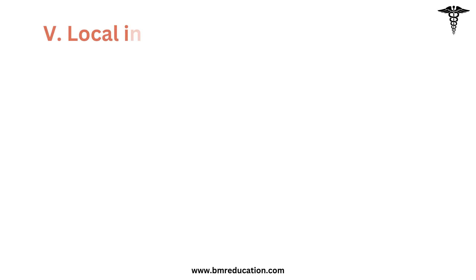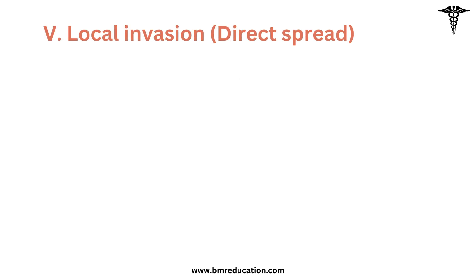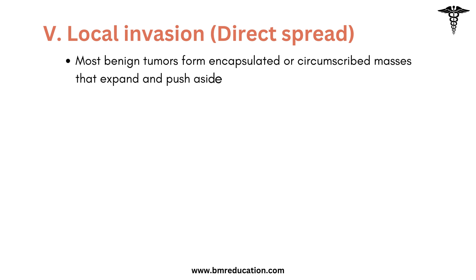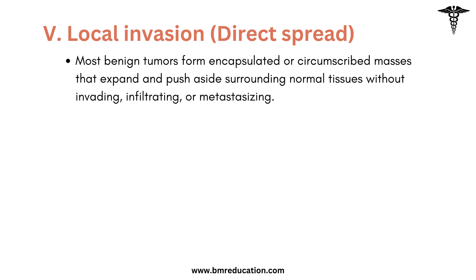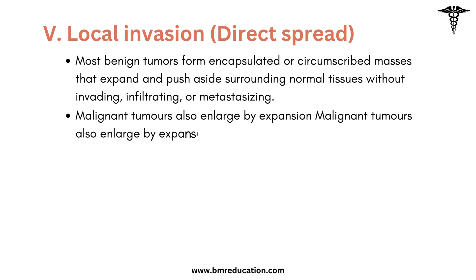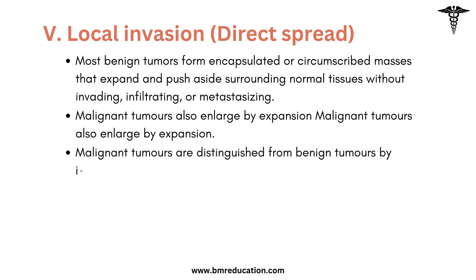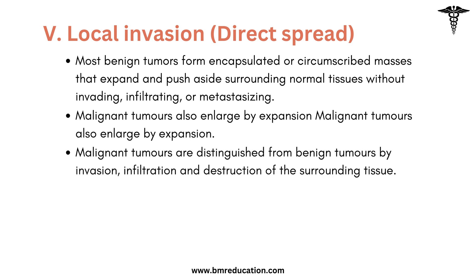The next feature is local invasion. Most benign tumors form encapsulated or circumscribed masses that expand and push aside surrounding normal tissues without invading, infiltrating, or metastasizing. Malignant tumors also enlarge by expansion, but they are distinguished from benign tumors by invasion, infiltration, and destruction of the surrounding tissue.